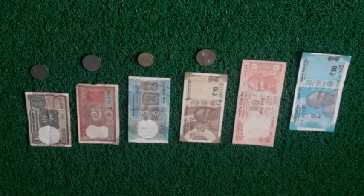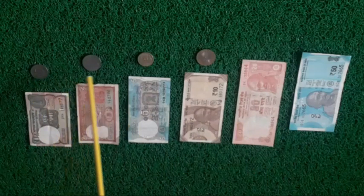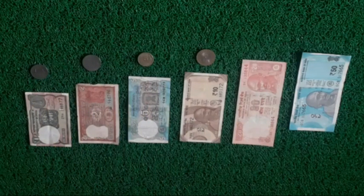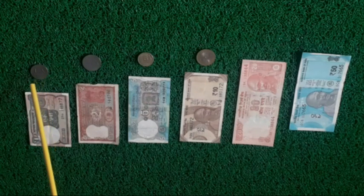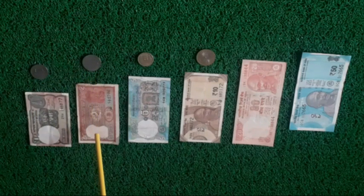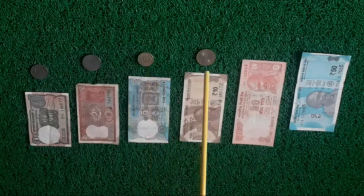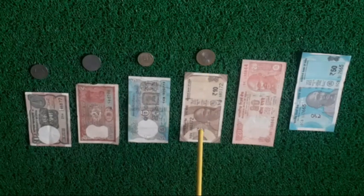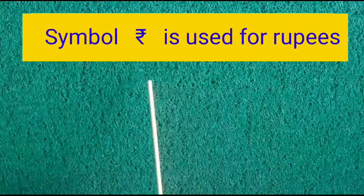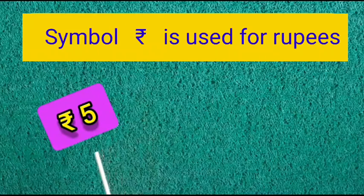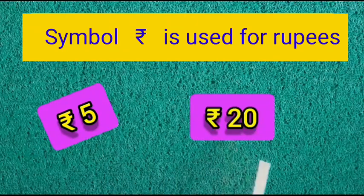These are currency notes and coins from one to fifty that are used in Indian currency. There is a one rupee note and also a one rupee coin. Two rupees coin and also two rupees note. Five rupees note and also five rupees coin. And there are ten rupees coin and also ten rupees note. Rupees is written with this symbol, and this symbol is used before the amount.